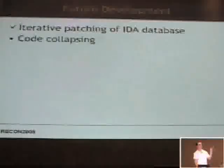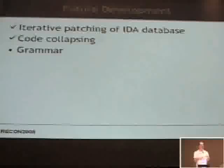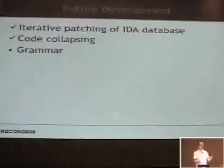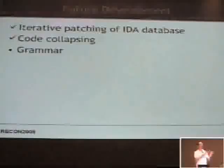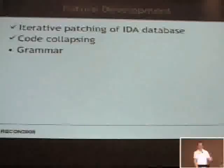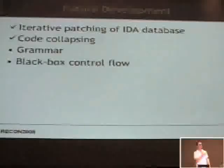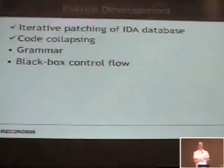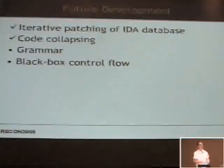For future development — patching and code collapsing we've already done. It would be nice to add a sort of grammar-like parser so that people, without needing source code or needing to write source code for every pattern, could just say they found a pattern with a move of an immediate into a register and write patterns in that way. We'd also like to do black-box control flow tracking to track successors and predecessors across calls and jumps, so we can determine if there's bogus control flow or honey code that never really gets executed — just there for show — which would eliminate a lot of reverse engineering time.